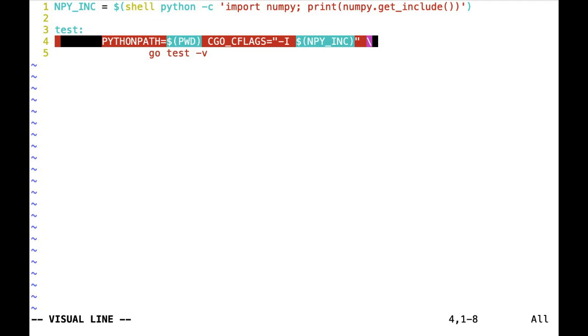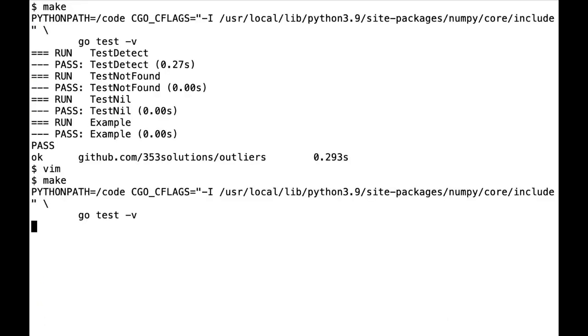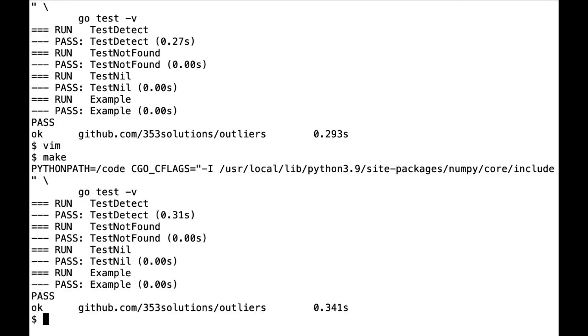Another thing I need to do is because I'm doing an import in Python, Python is looking for a module in something called the Python path. I'm adding the current directory where the outliers.py is to the Python path, so our test will work. And finally, we can run the tests, and we can see that they're passing.